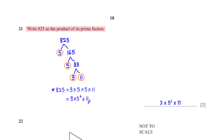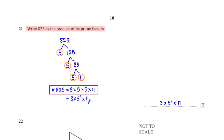Write 825 as the product of its prime factors. 825 = 5 × 165; 165 = 5 × 33; 33 = 3 × 11. So 825 = 3 × 5 × 5 × 11, which can also be written as 3 × 5² × 11.